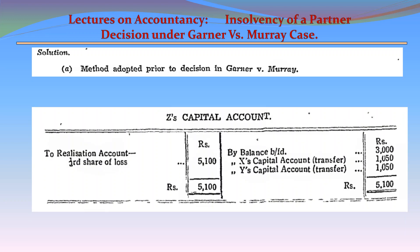Let us prepare Z's capital account as he has become insolvent, to know how X and Y share the deficit among themselves. Z's capital account: by balance brought down 3,000; to realization account (one-third share of loss) 5,100. Total loss equals 2,100, shared equally: transferred to X's capital account 1,050; to Y's capital account 1,050.